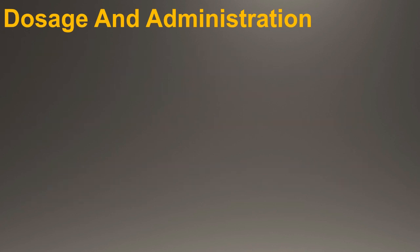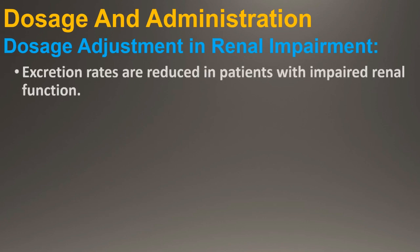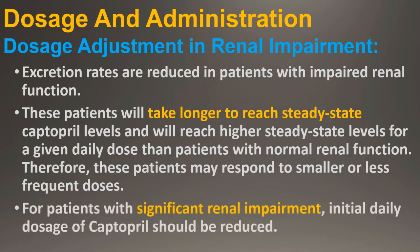Dosage adjustment in renal impairment: Because Captopril is excreted primarily by the kidneys, excretion rates are reduced in patients with impaired renal function. These patients will take longer to reach steady-state Captopril levels and will reach higher steady-state levels for a given daily dose than patients with normal renal function. Therefore, these patients may respond to smaller or less frequent doses. Accordingly, for patients with significant renal impairment, initial daily dosage of Captopril should be reduced and smaller increments utilized for titration, which should be quite slow — one to two weeks.